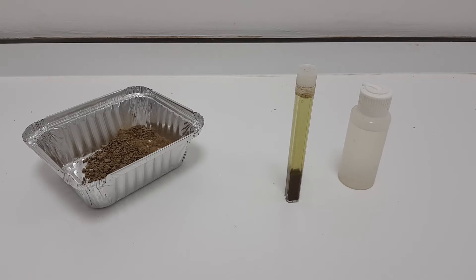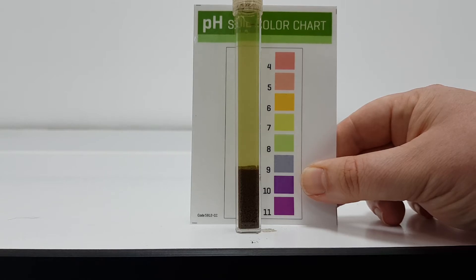Once the sample has settled, use the pH chart to read the result. To do this, hold the white part of the pH color chart behind the test tube. Then compare the color of the liquid to the colors on the chart.